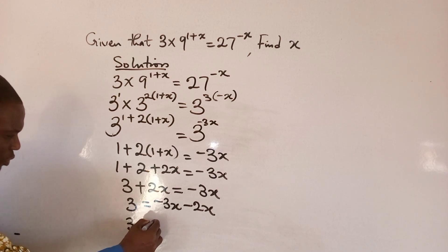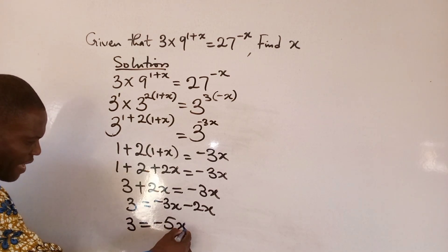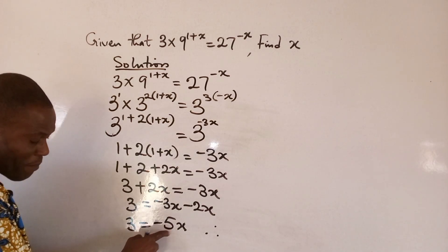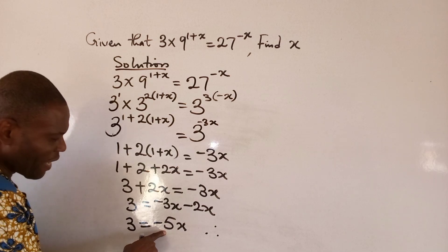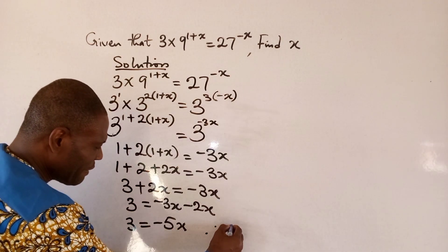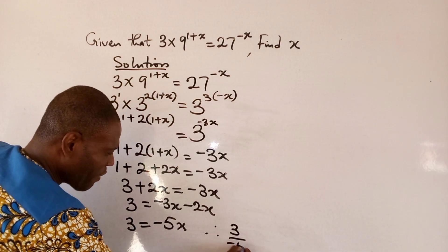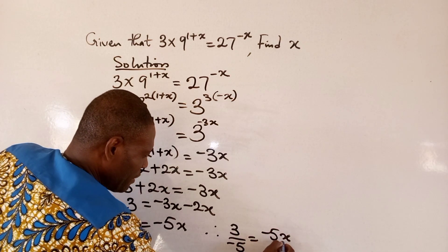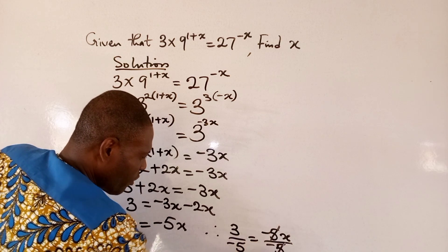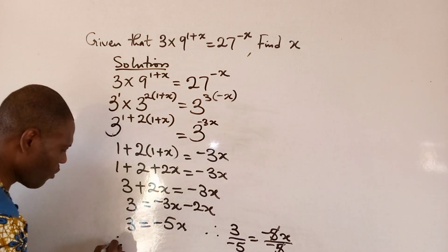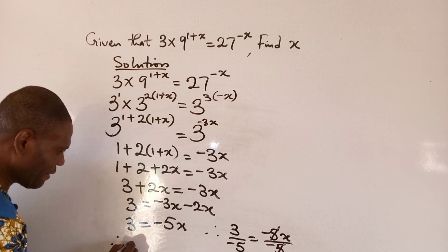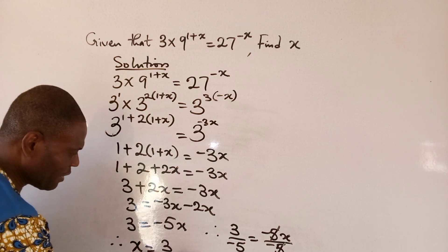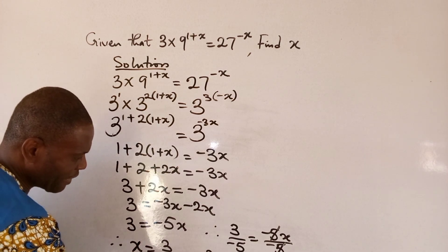So, we have 3 equals to minus 5x. So, we divide both sides by minus 5. Therefore, we have it to be 3 divided by minus 5 equals to minus 5x divided by minus 5. So, this, we cancel off this. So, we have, therefore, we have x there is equals to 3 over minus 5. Or, you can even say it's minus 3 divided by 5.